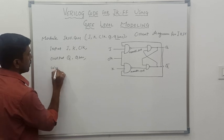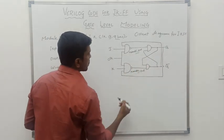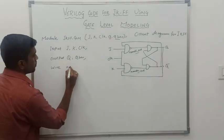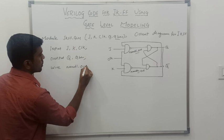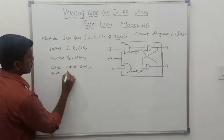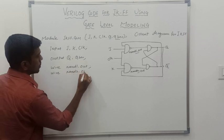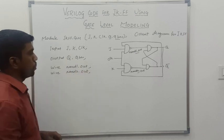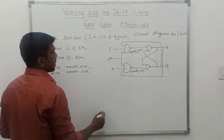Then we declare wire signals. These two outputs are considered as wire signals: NAND 1 out and NAND 2 out. These two signals are considered wire signals. Then we go to perform the NAND operations.